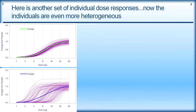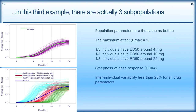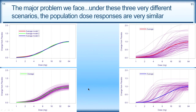Finally, here is another set of individual dose responses where the individual curves are even more heterogeneous. This third example was created using three subpopulations: one group with a low ED50 of around 4 shown in light blue, one with an ED50 of around 10 in red, and a third group with an ED50 of around 25. The major problem we face is that under these three very different individual scenarios, the average curves look very similar — they are nearly all superimposed on each other.